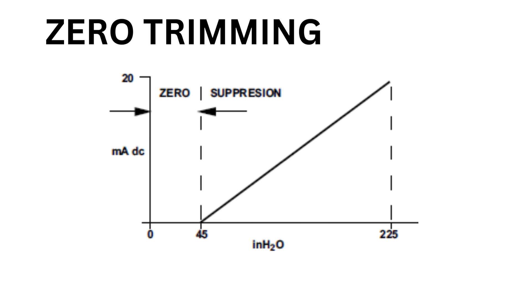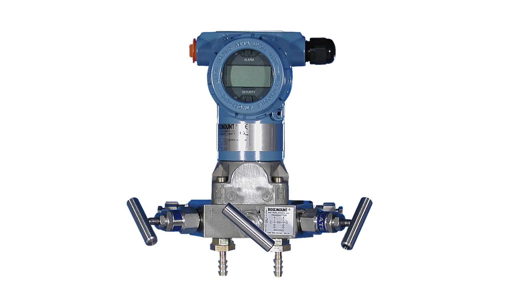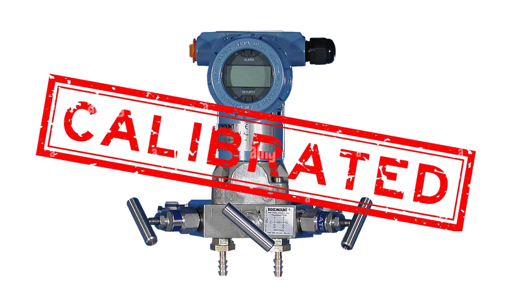Now check the 100% flow point by applying the 100% DP pressure to the input of the transmitter. If the reading does not indicate 100% flow, perform a span trim using the HART calibrator. When the lower trim and span trim is completed, the transmitter is calibrated.